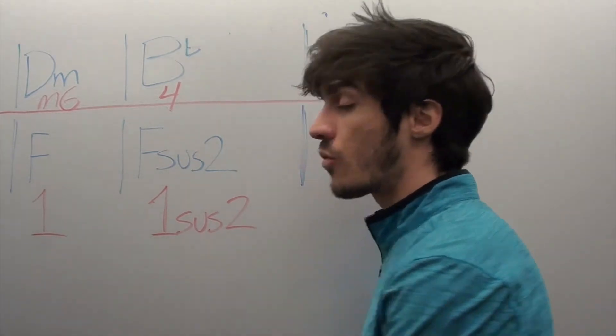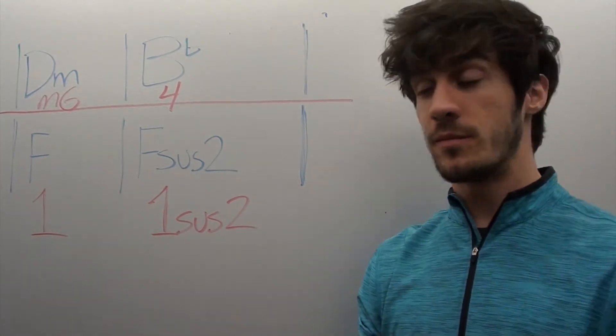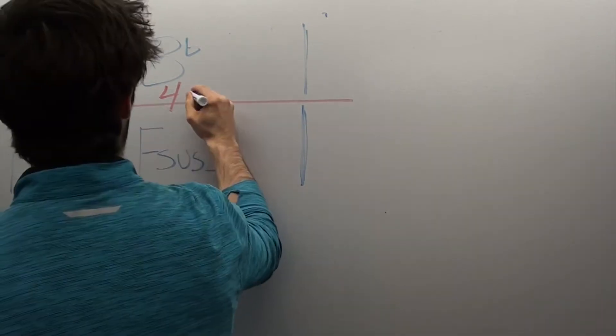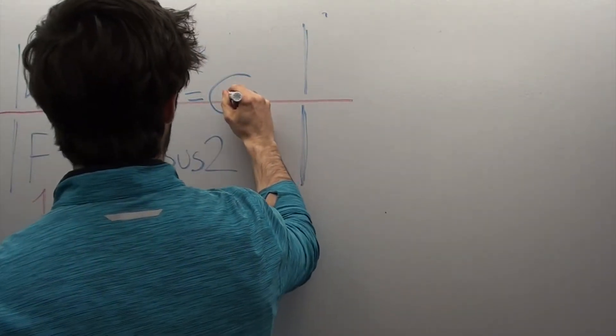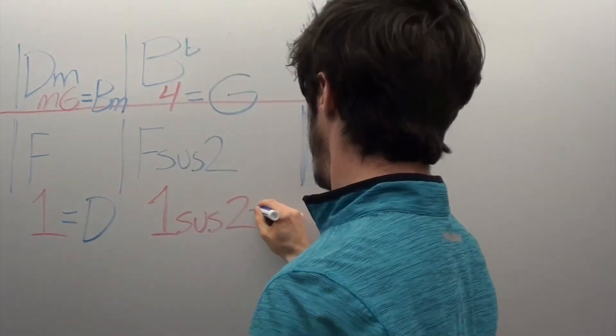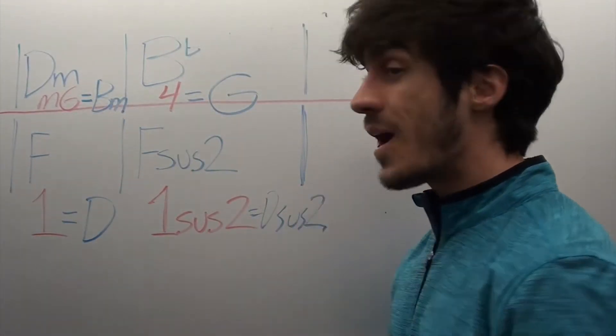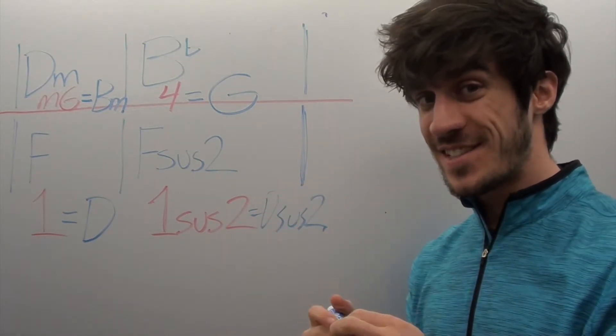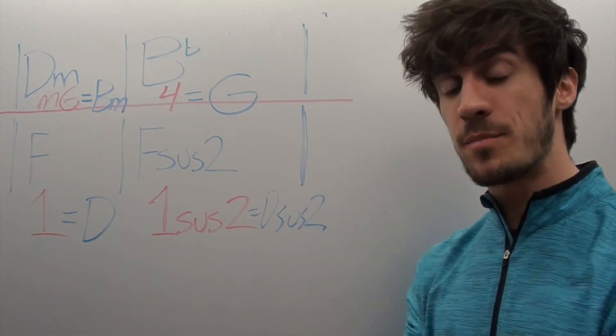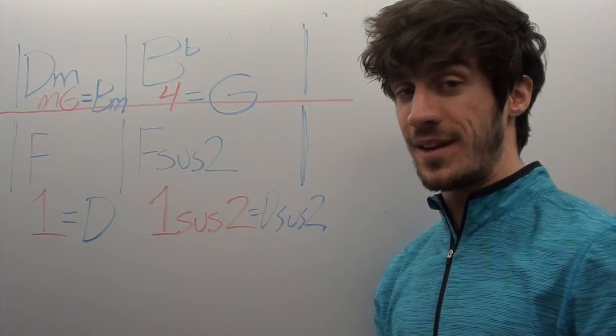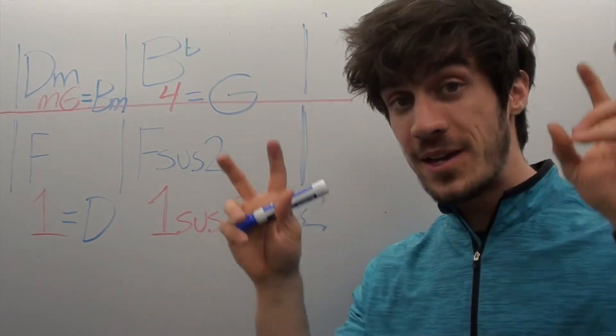So let's say we want to write in D instead of F. So in D, your minor 6 becomes your B minor, your 4 becomes your G, and your 1, since we're in the key of D, becomes D. This is a Dsus2. You now have a brand new progression that sounds kind of like Coldplay, but it's not the exact same thing. This is a great way to bring in influence from artists that you really, really like without outright copying them. This is how you make it your own. If you're a songwriter, you've probably heard people say that. This is one way to do that.